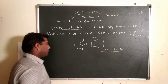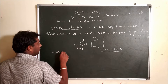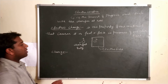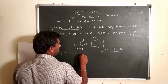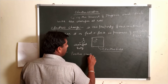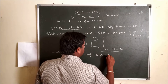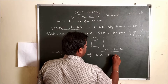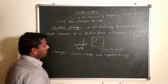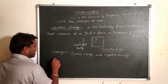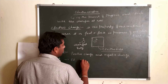Now, as we have discussed in the lower classes, there are two types of charge: positive charge and negative charge. What is the unit of charge? The SI (Standard International) unit of charge is the Coulomb.